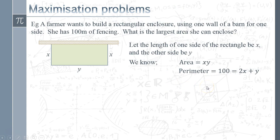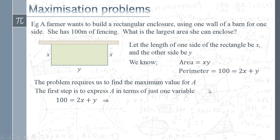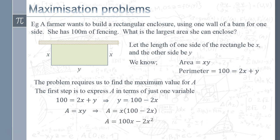We want the whole thing written in terms of x, and since the thing we need to maximize is area, I'm going to focus on that. I'll get rid of the y variable by rearranging the perimeter equation: y equals 100 minus 2x. That can now be substituted into the area equation, giving us the area expressed purely in terms of x: A = x(100 − 2x).